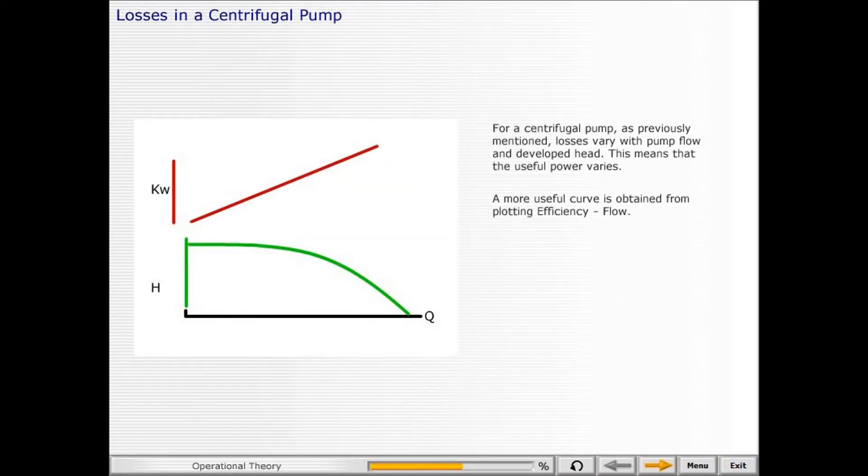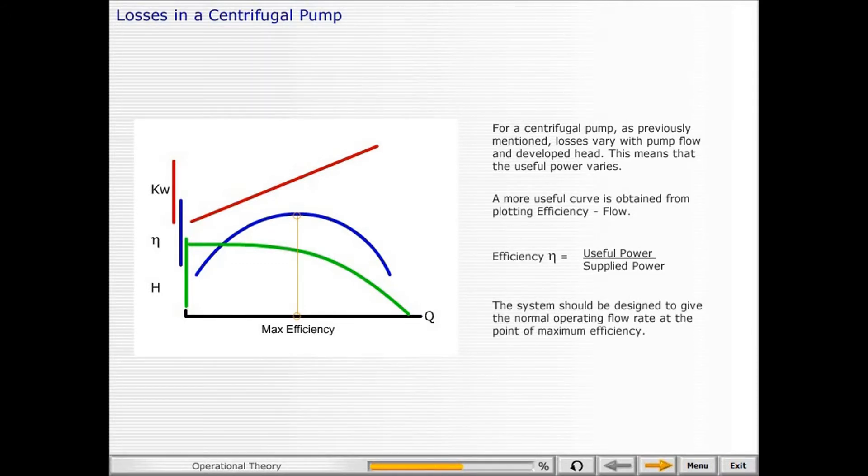For a centrifugal pump, losses vary with pump flow and developed head. This means that the useful power varies. A more useful curve is obtained from plotting efficiency to flow. Efficiency equals useful power divided by supplied power. The system should be designed to give the normal operating flow rate at the point of maximum efficiency.